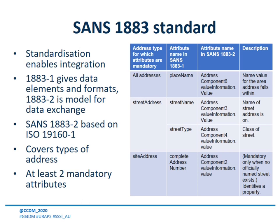Part 1883-2 involves things such as computer data types. It's mandatory for every address, no matter what class it is, to have two elements: one is an unambiguous identifier of that location, and the other is a regional identifier. For instance, in street addresses the unambiguous identifier is the street name, and the regional identifier is the place name referring to the specific area that street is in. For a landmark address, the identifier might be its name — for example, town hall — and the regional identifier would be the town to which that town hall belongs. A successfully transformed address should possess both of these mandatory elements.